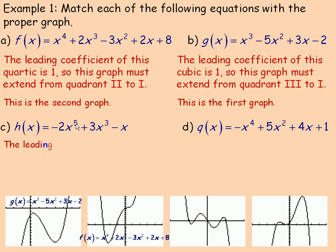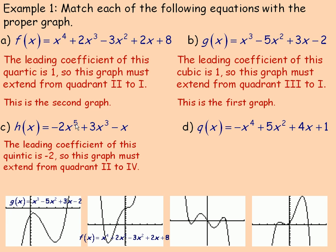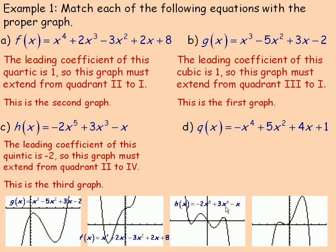For c, it's a fifth order polynomial — a quintic. The leading coefficient is negative. Odd functions normally start in the third quadrant and go to the first, but if there's a negative leading coefficient, they're reflected in the x-axis. So in this case, this odd quintic function would start in quadrant two and go to quadrant four. If it was a positive quintic, it would start down here, turn a couple of times, and go up. So this would have to be the third graph — that's the h(x) function.